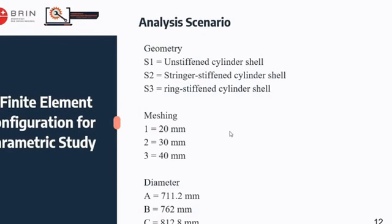The geometry types are unstiffened cylinder shell, stringer-stiffened cylinder shell, and ring-stiffened cylinder shell, symbolized by the code S1, S2, and S3 respectively.